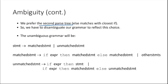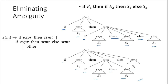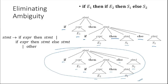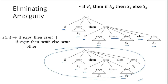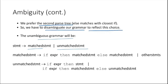We prefer that particular parse tree, so we have to disambiguate our grammar to reflect this choice. We rewrite the grammar so that every time it generates that kind of parse tree. The unambiguous grammar introduces two categories: 'matched statement' and 'unmatched statement'. Matched statement equals 'if expression then matched statement else matched statement' or other statement. Unmatched statement equals 'if expression then matched statement else unmatched statement'.